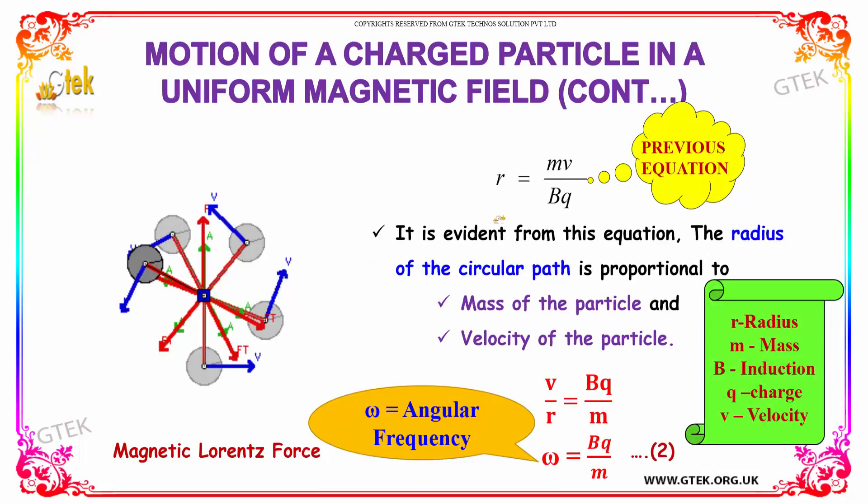So the previous equation is R equal to MV by BQ. The radius of the circular path is directly proportional to the mass of the particle and velocity of the particle. So V divided by R equals BQ by M.